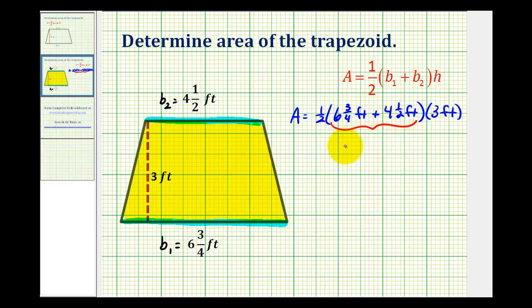So we'll have six and three fourths plus four and one half. Of course we have to have a common denominator which would be four. So multiply this fraction by two over two. So we have six and three fourths plus four and two fourths. So this will give us five fourths here and ten here. Well five fourths is an improper fraction and five fourths is equal to one and one fourth. So this would be ten plus one and one fourth or eleven and one fourth.